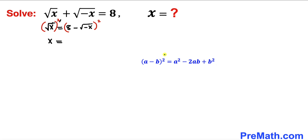Now let's recall this famous identity: a minus b, whole square, can be written as a squared minus 2ab plus b squared. We are going to apply it on the right hand side.